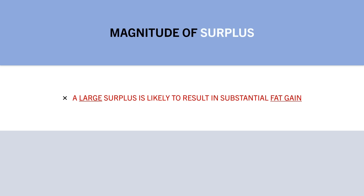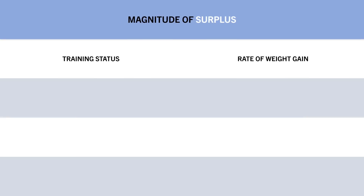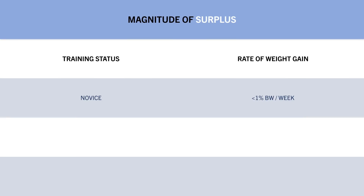If your body fat is already higher than you would like it to be, then a calorie surplus is not recommended. If you are already quite lean and want to maximise your rate of muscle growth, here are some general recommendations: novices may benefit from gaining up to 1% of body weight per week in their initial months of lifting; intermediate lifters should probably aim for no more than around 0.5% of body weight per week; and advanced lifters should aim for no more than around 0.25% of body weight per week.